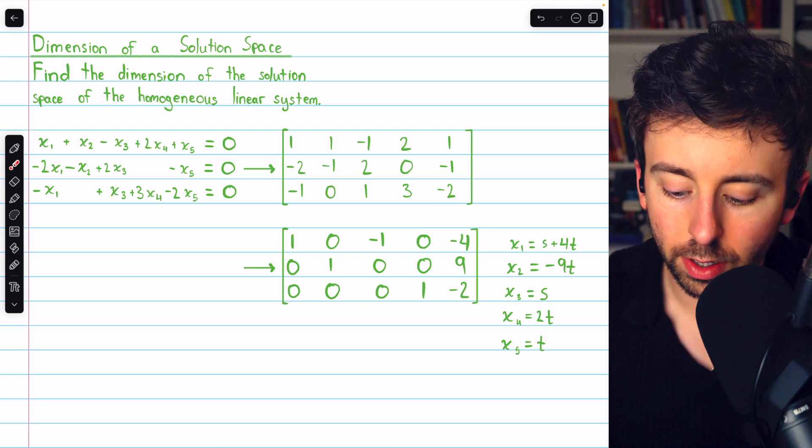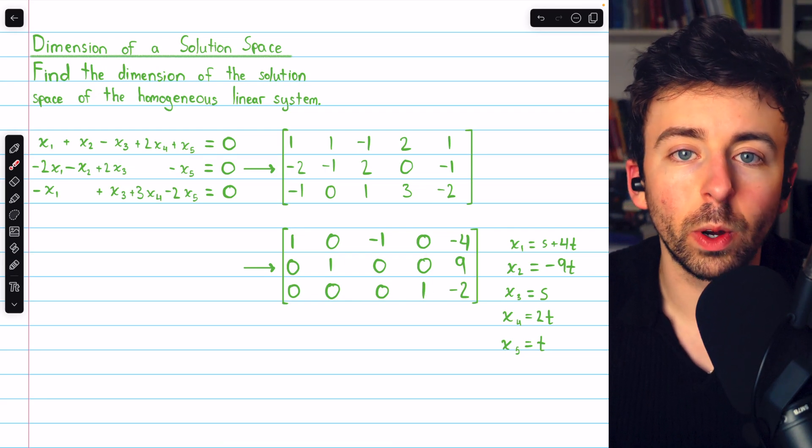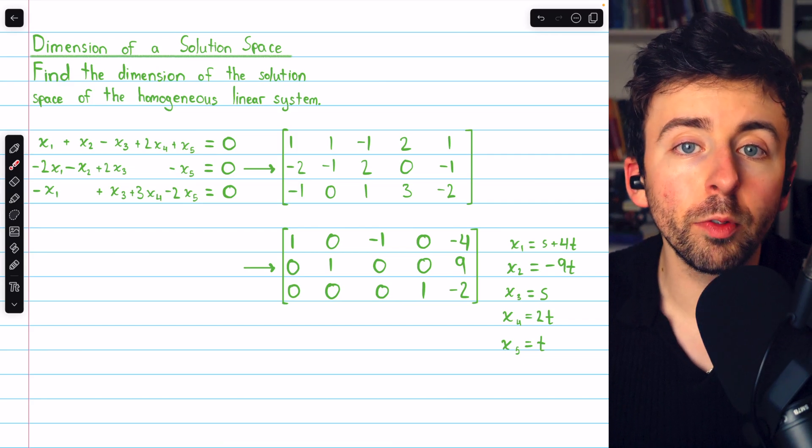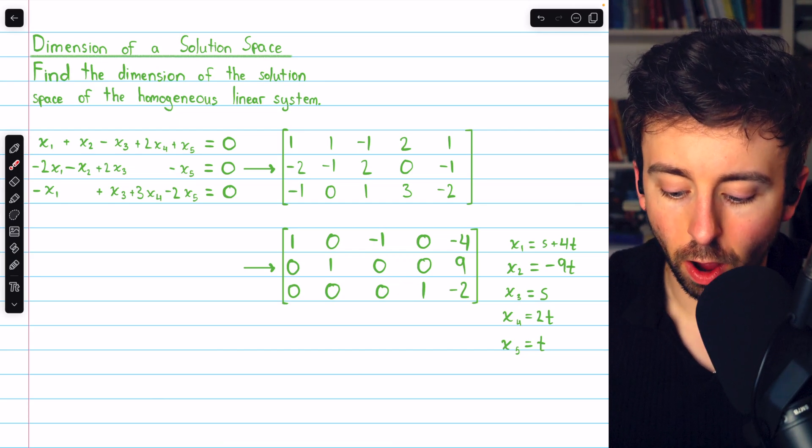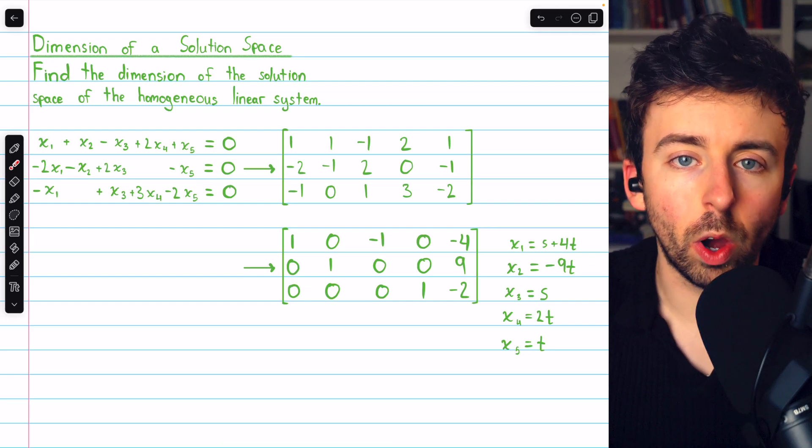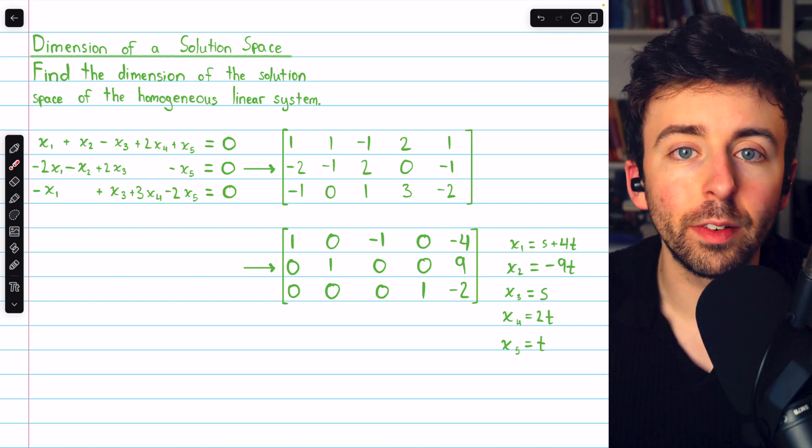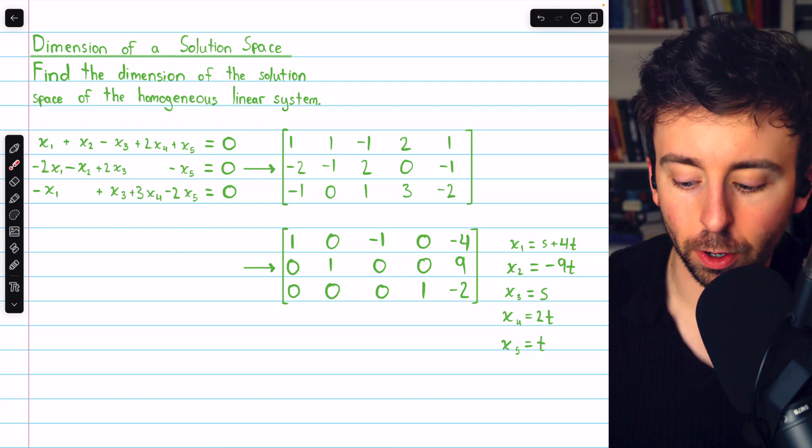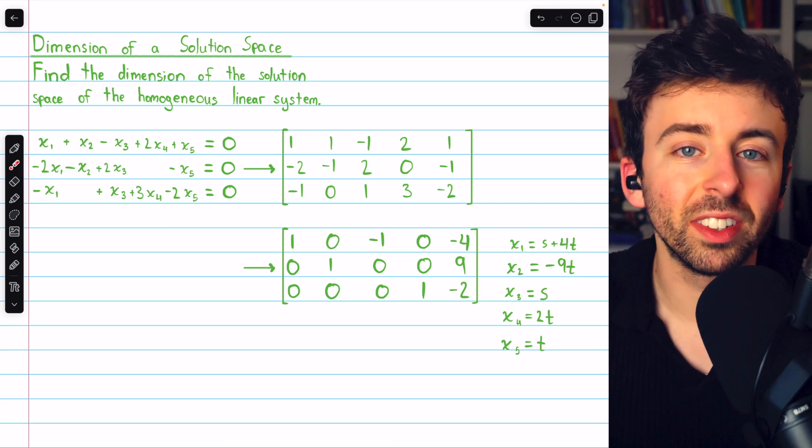Columns 1, 2, and 4 have leading 1s. So x₁, x₂, and x₄ are our leading variables that we'll solve for in terms of the free variables. Since we see column 3 and column 5 do not have leading 1s, the corresponding variables, x₃ and x₅ are our free variables. So we'll assign them each to an arbitrary parameter. Let's say x₅ equals t and x₃ equals s.